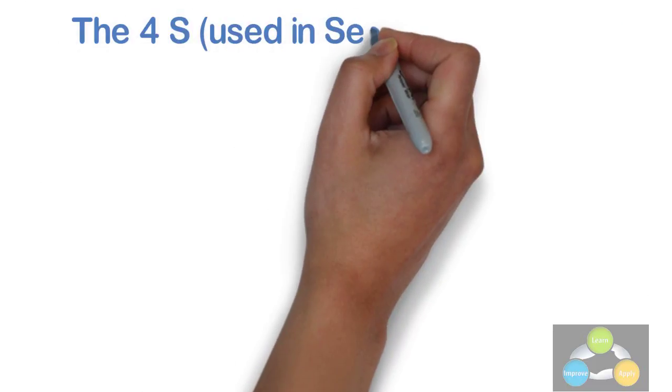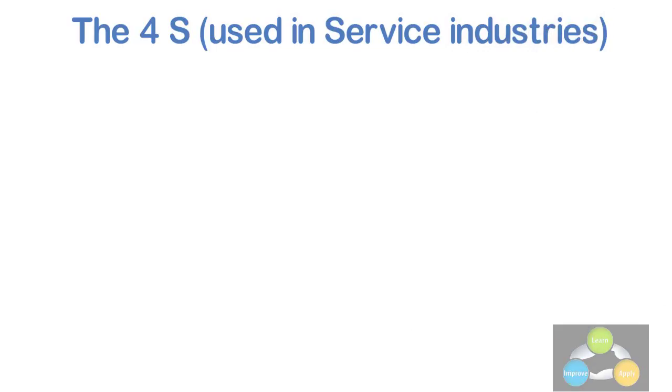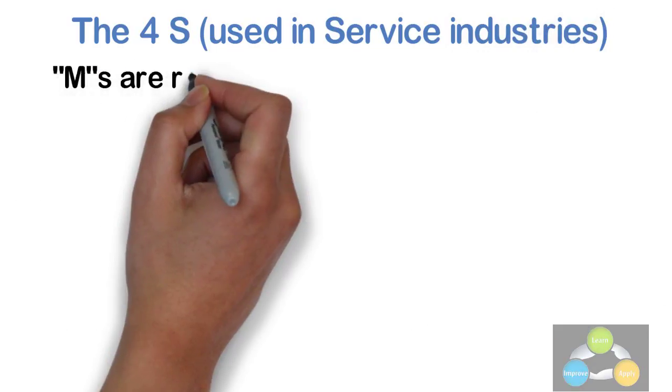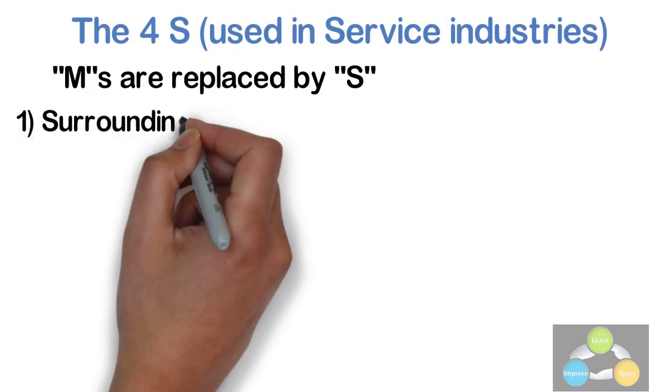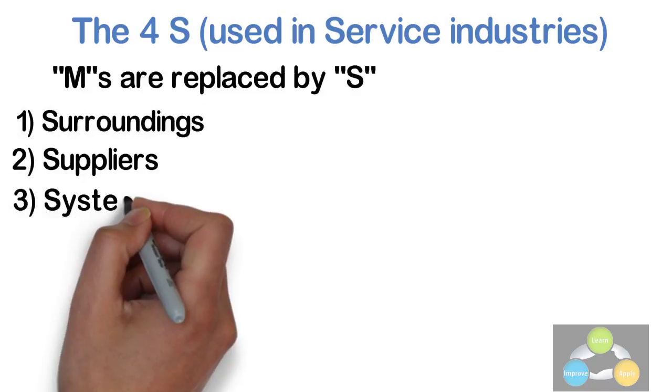The 4 S's. This is used in service industries. In service industries, M's are replaced by S's. An alternative used for service industries uses four categories of possible causes: Surroundings, Suppliers, Systems, and Skills.